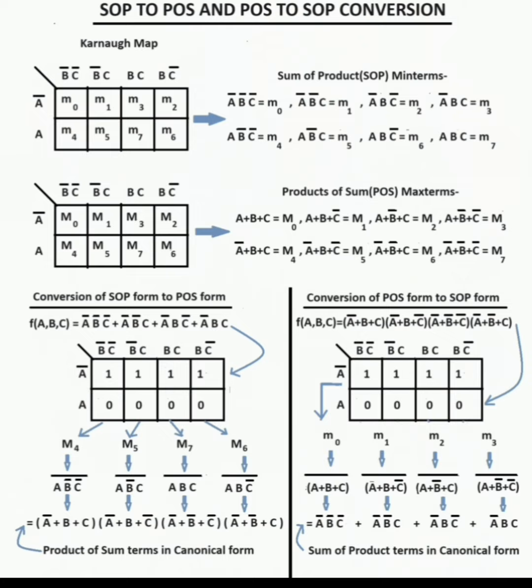A Karnaugh map is given for minterms and maxterms to convert from SOP to POS form. Using the complement method, the maxterms obtained are M4, M5, M7, and M6. For the conversion of POS form to SOP form, the method is given here, and the minterms obtained are M0.